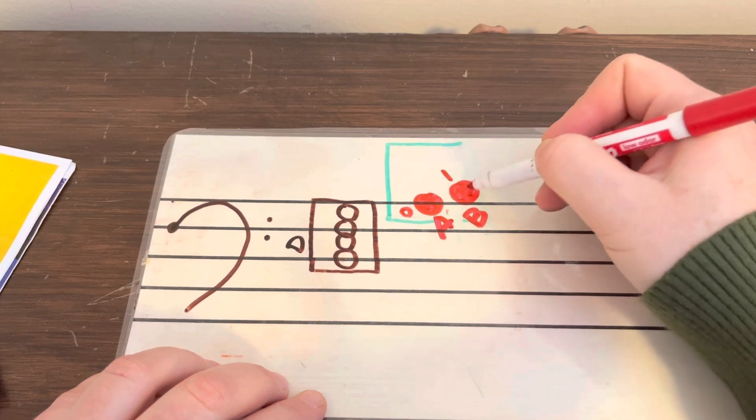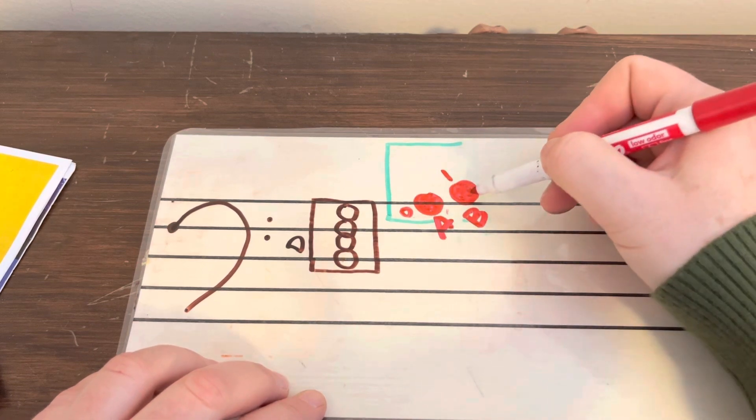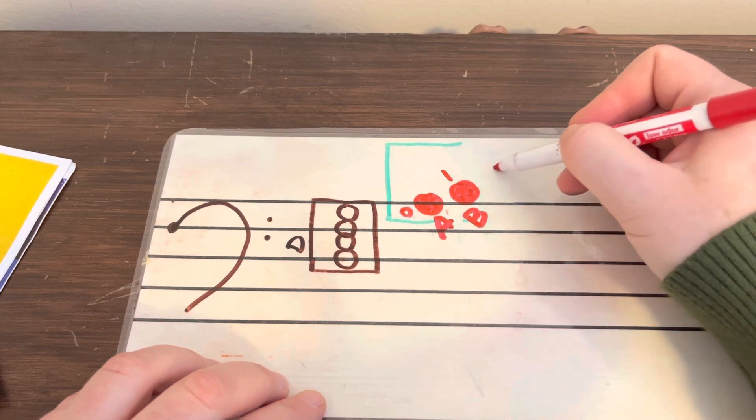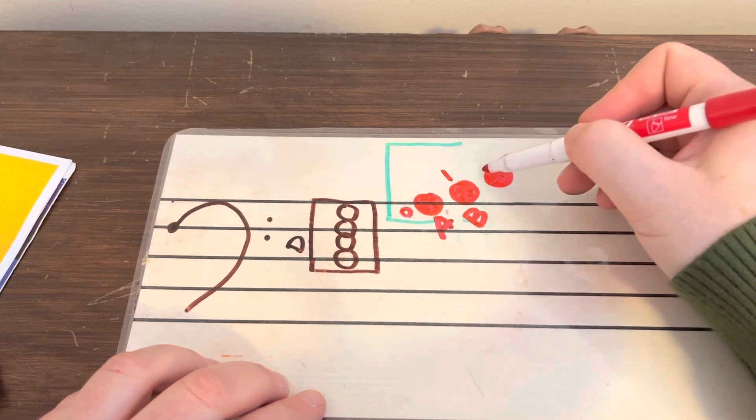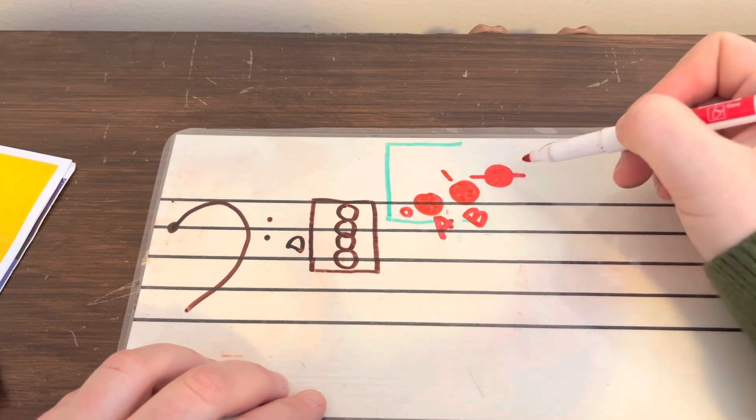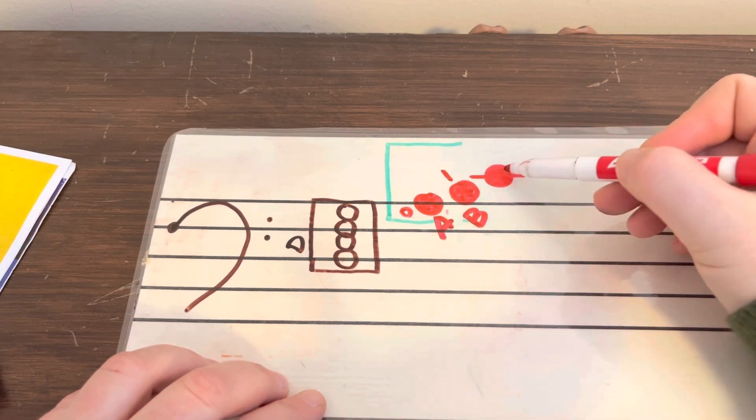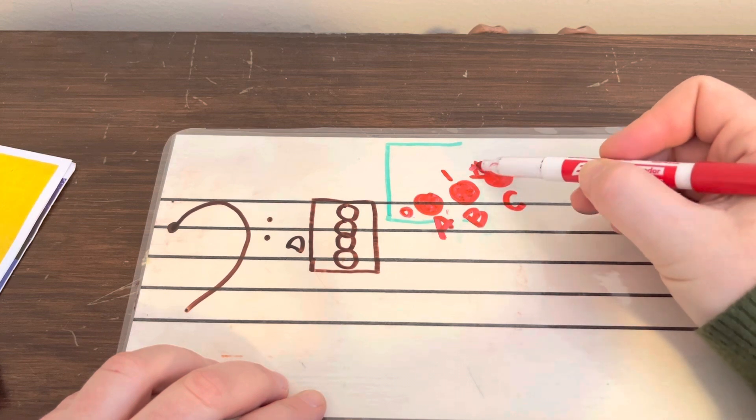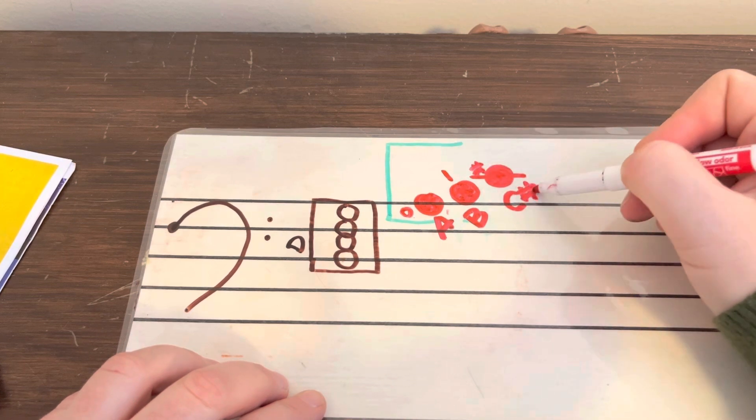So A, B. Now because we're going to keep going up, we need an extension line to help our eyes see and be able to tell which note, so it's not just a note kind of floating up here. So we have our line going through it. We have line, space, line. So we've got that line through it. And we're going to put a little sharp in front of it for now. So there's our C sharp.